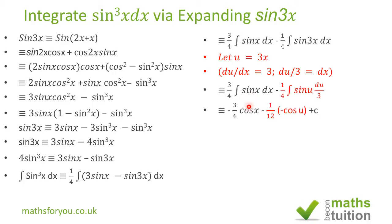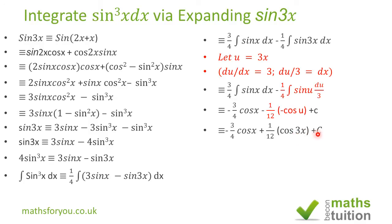When you integrate sin x you get minus cos x, so that becomes minus three-quarters cos x. When you integrate sin u you get minus cos u, giving plus one-twelfth cos u plus integration constant C. Substituting back u equals 3x, we end up with minus three-quarters cos x plus one-twelfth cos 3x plus C. So the integration of sine cubed x equals one-twelfth cos 3x minus three-quarters cos x plus C.